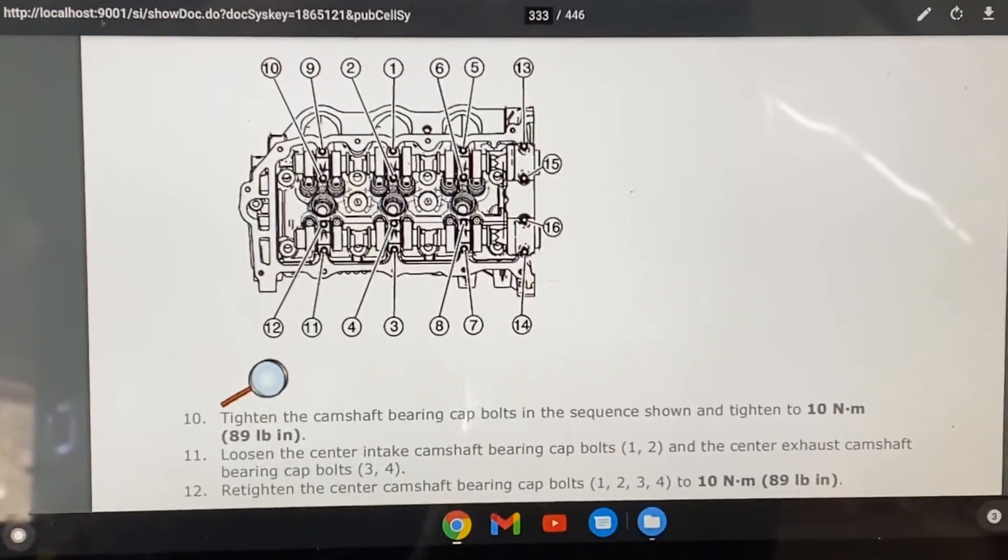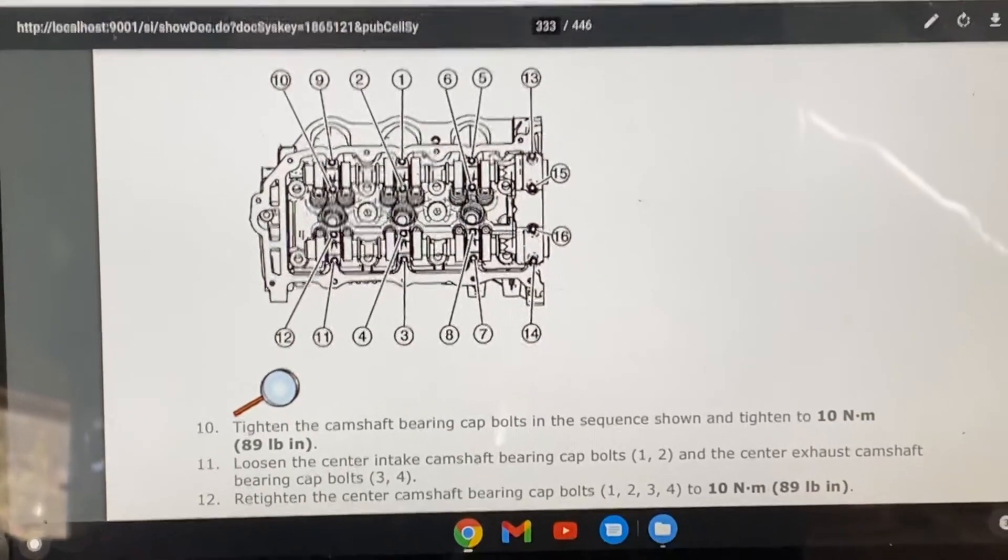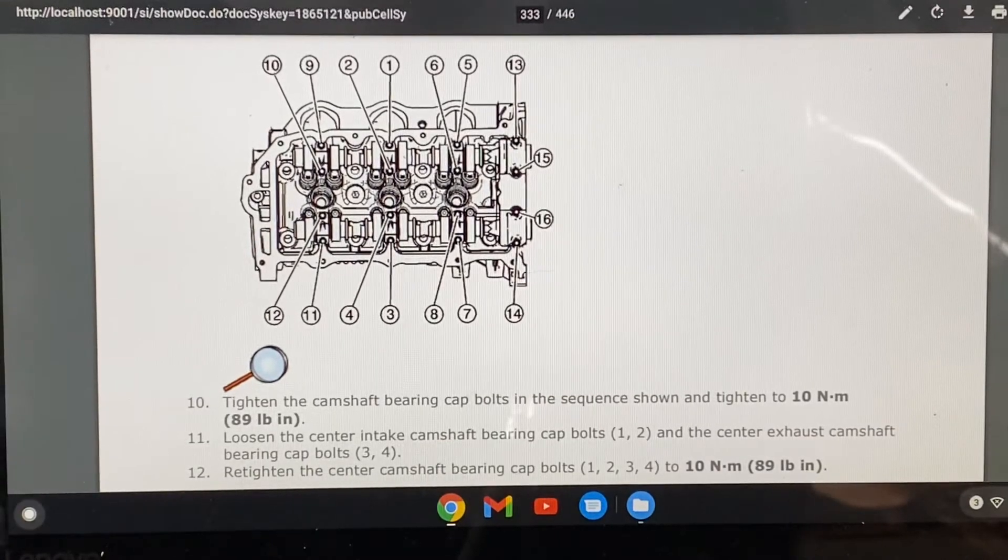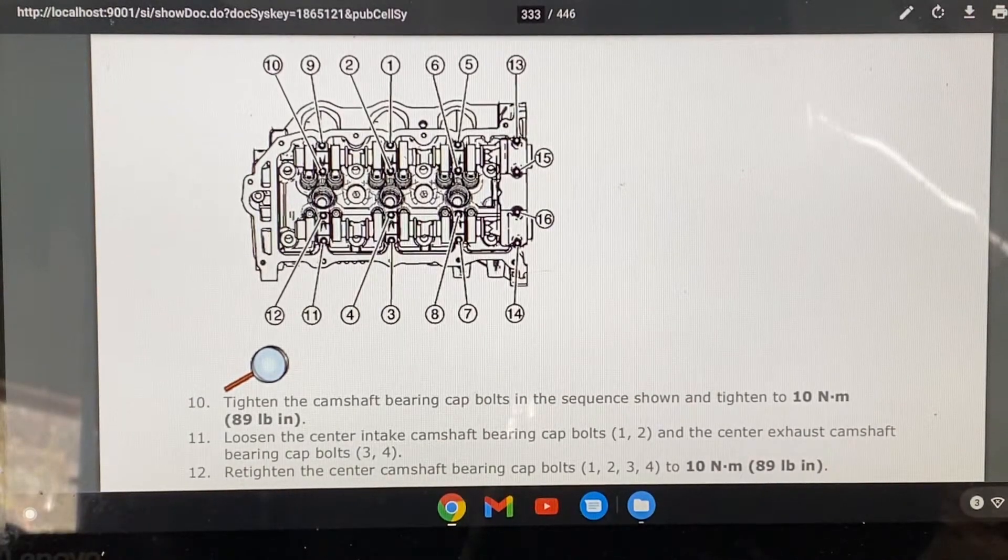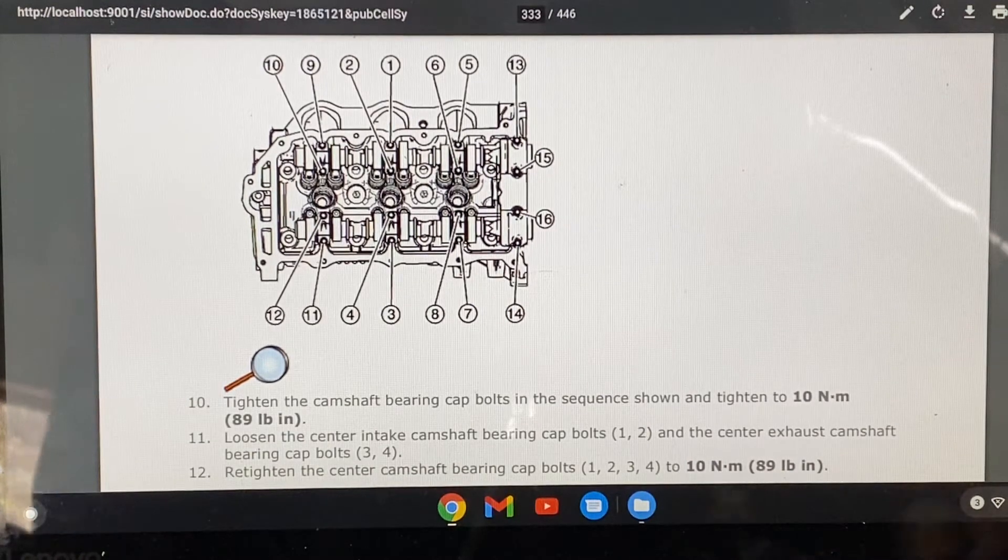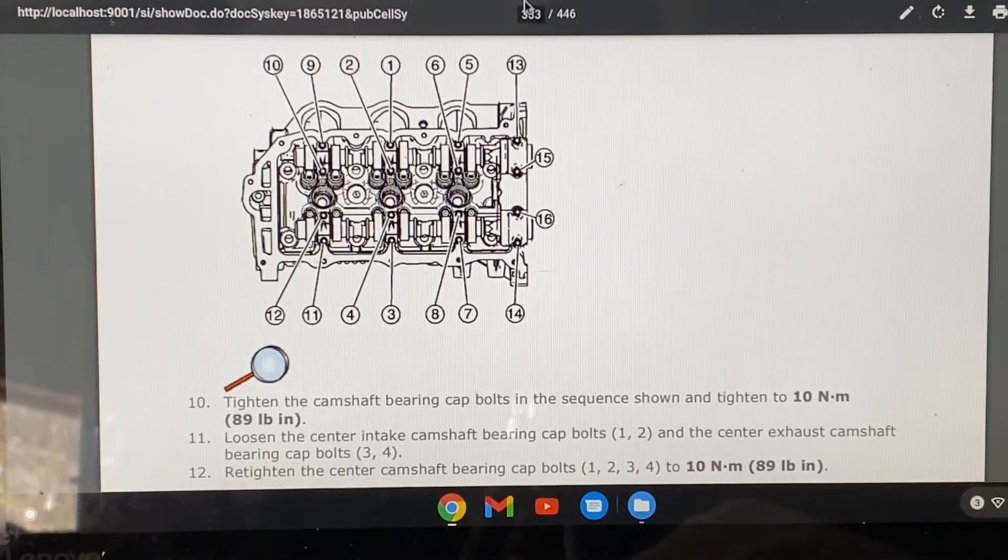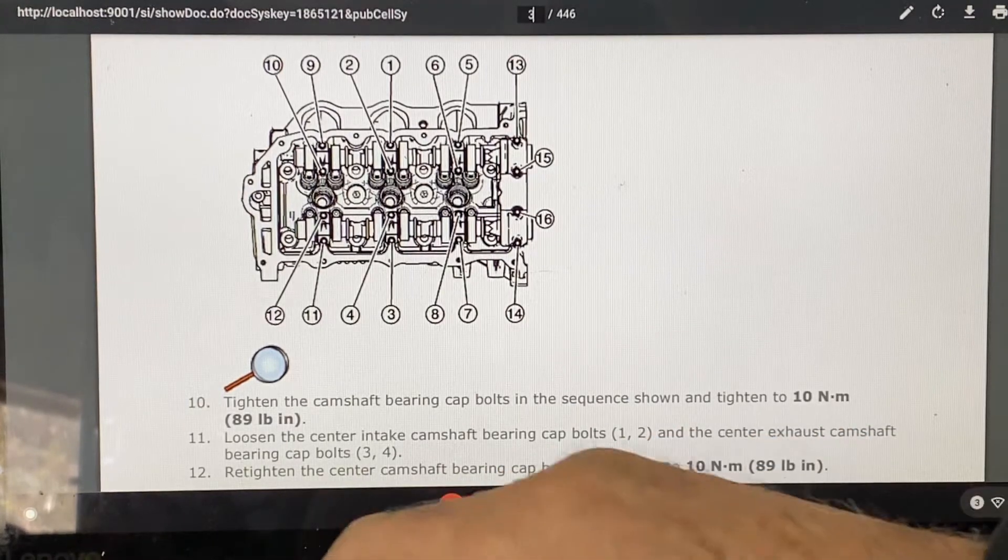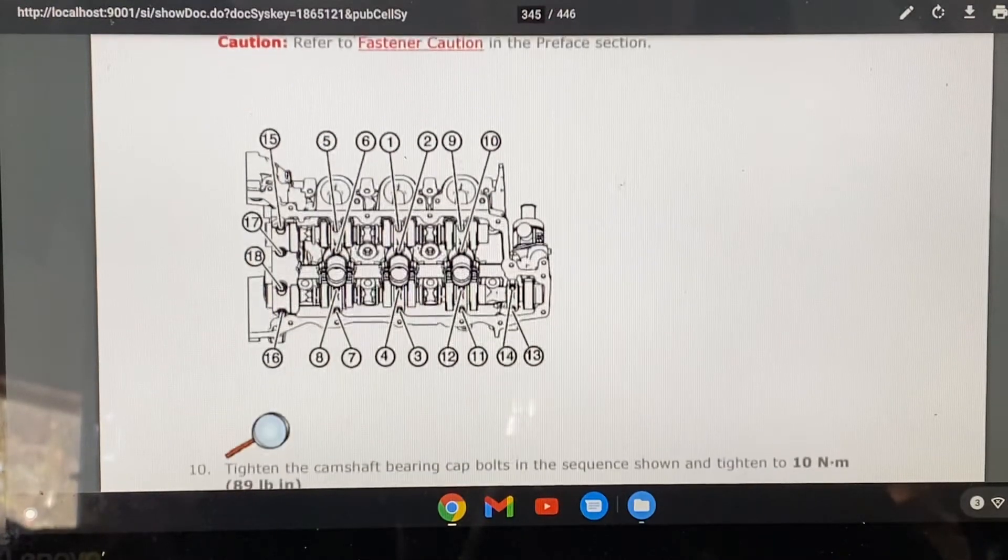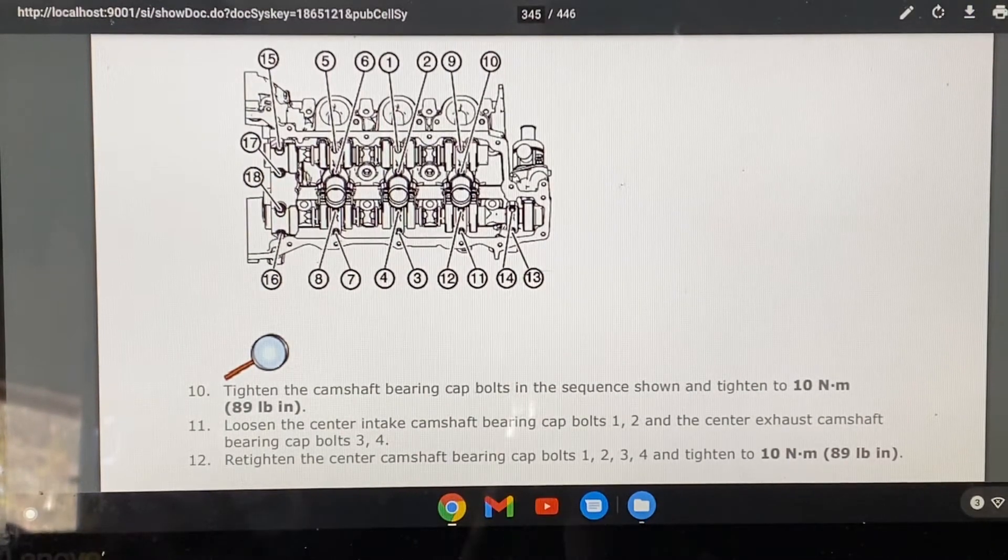This one here is the cam caps. The torque sequence and the numbers: 89 inch-pounds. This one is the right head cam caps. This one here is the left head cam caps, the torque sequence and 89 inch-pounds.